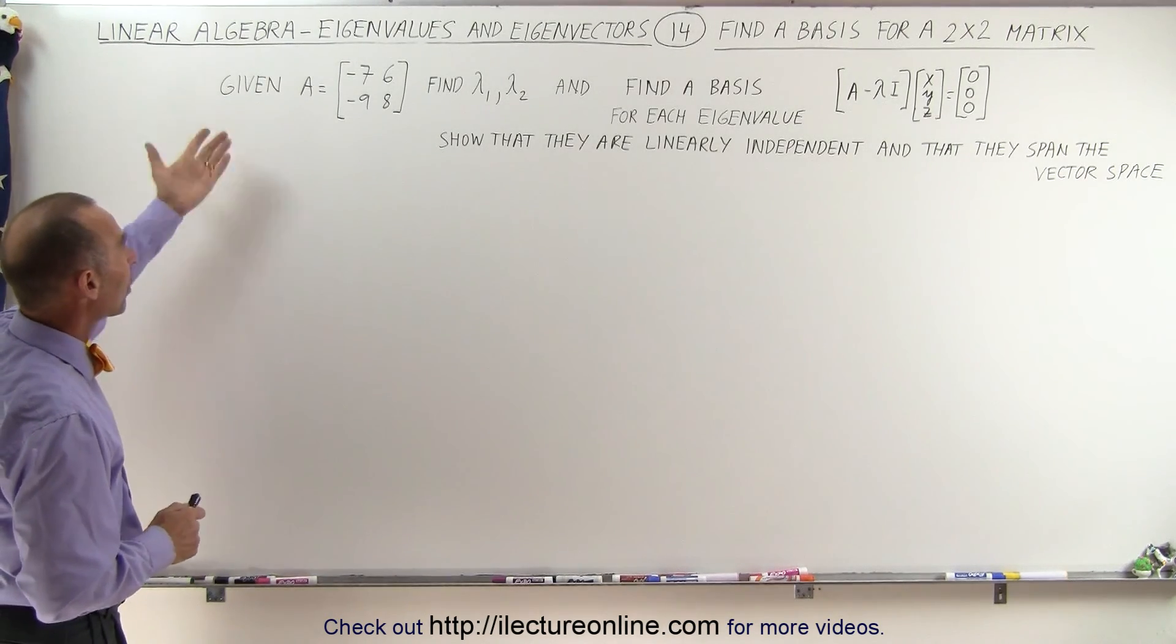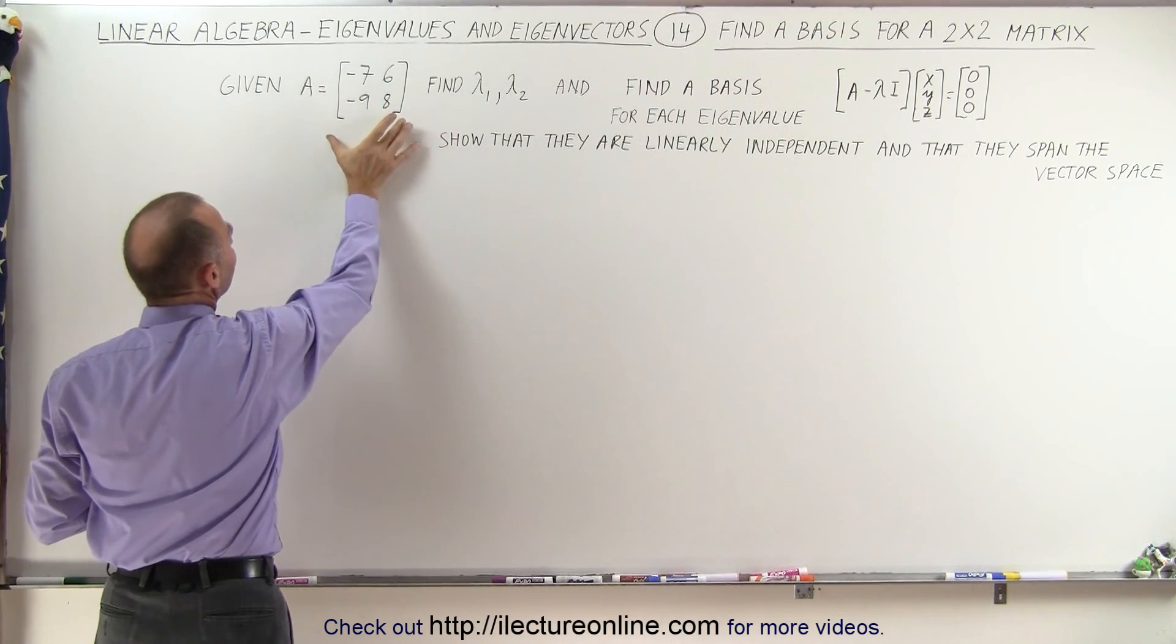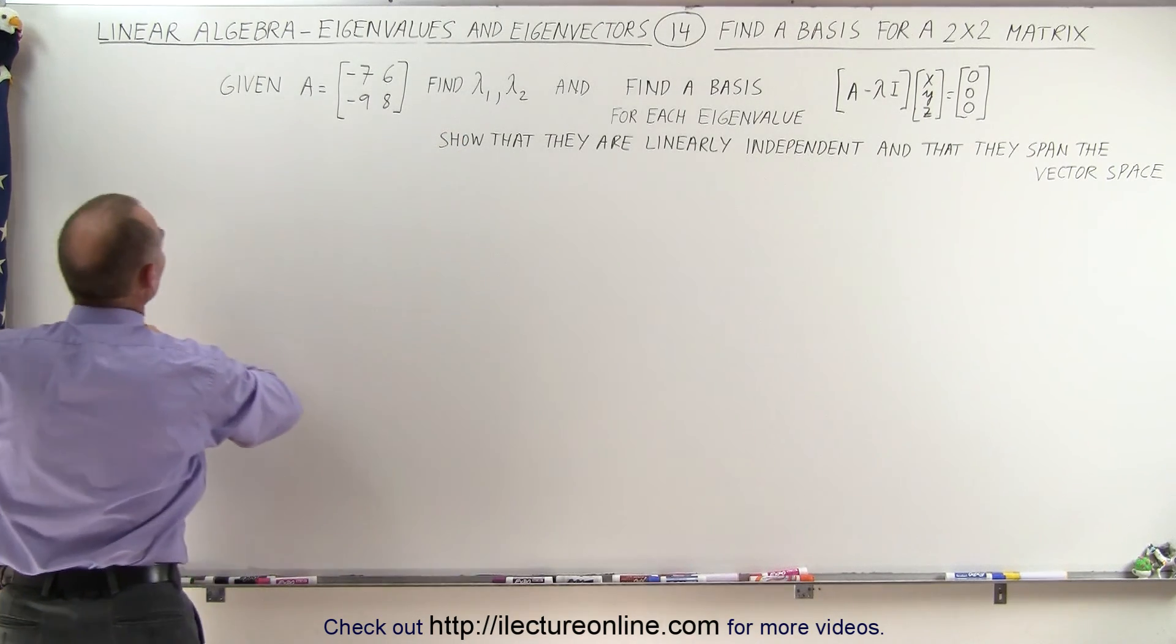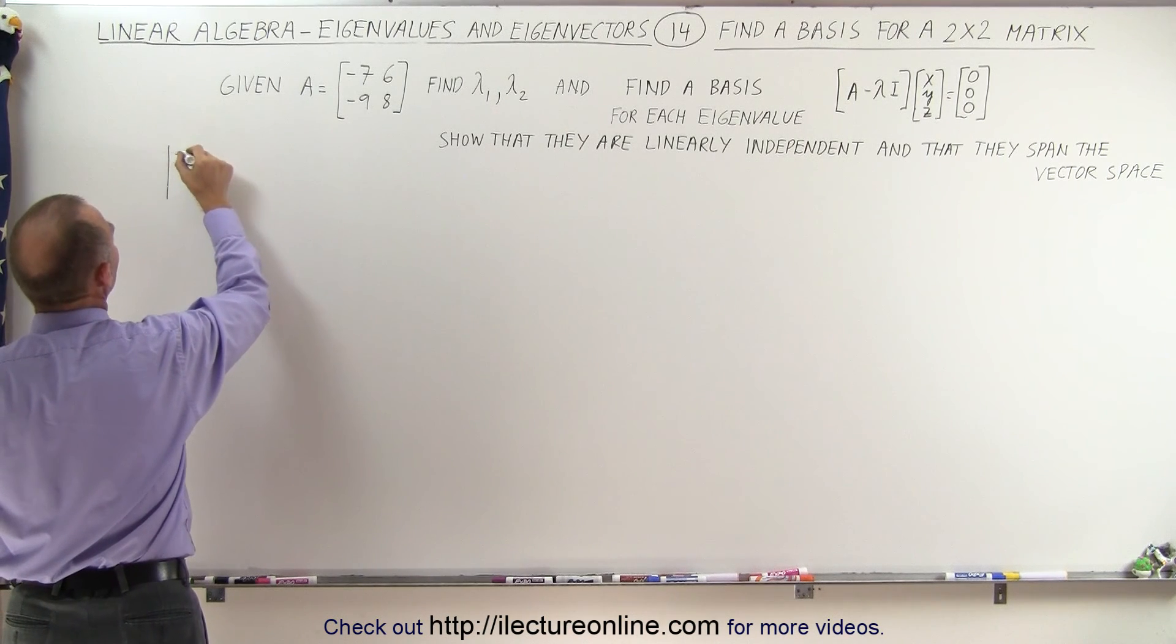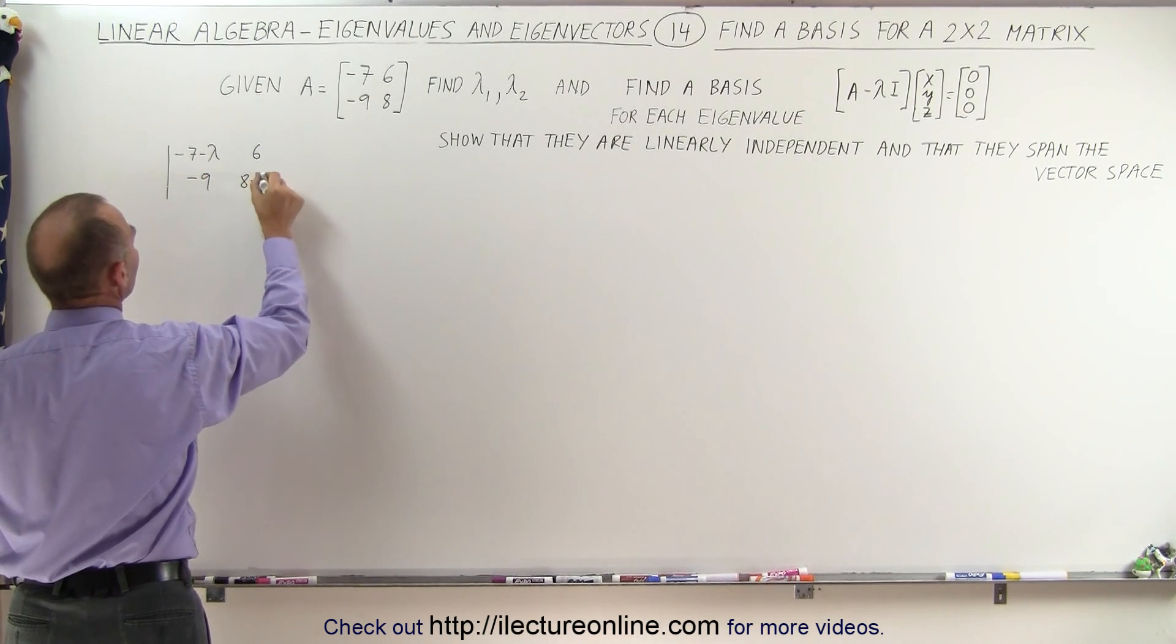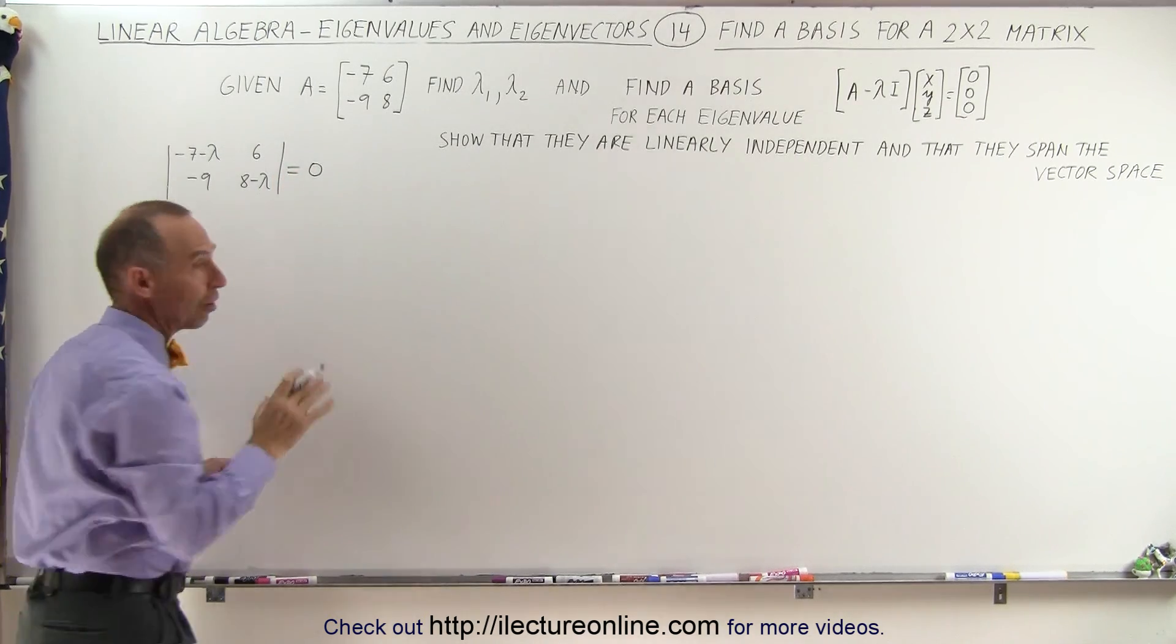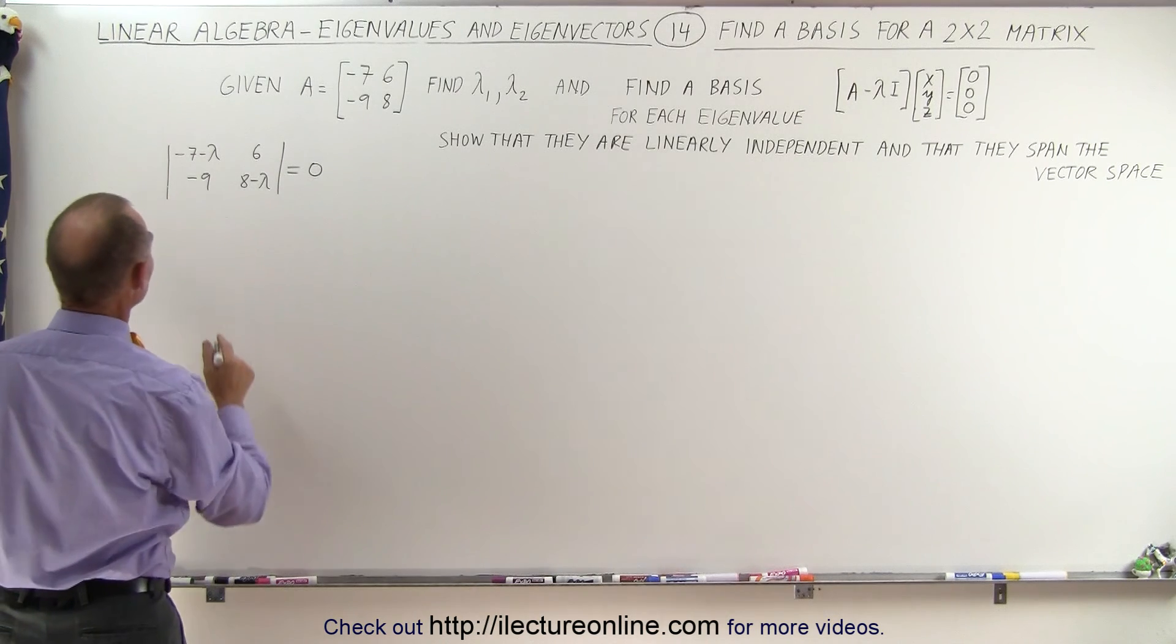Starting with that, what we're going to do is subtract lambda from the diagonals and take the determinant of that and set it equal to 0. We're going to take minus 7 minus lambda, 6 minus 9, and 8 minus lambda, and take that determinant and set it equal to 0 and solve for lambda. We should get two values, the two eigenvalues of this matrix.